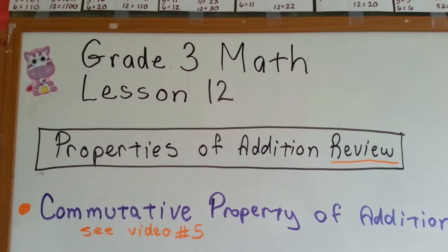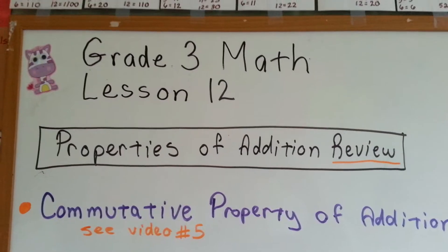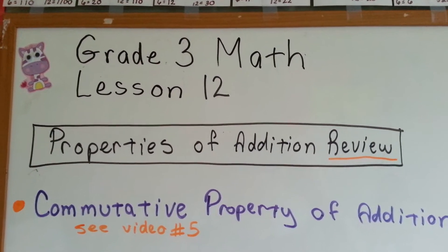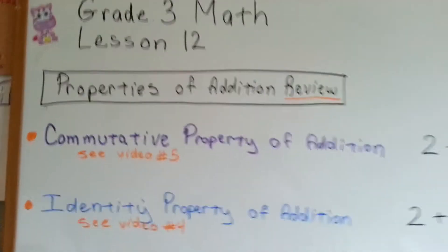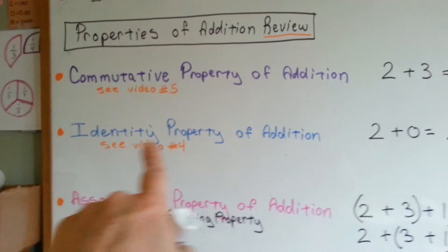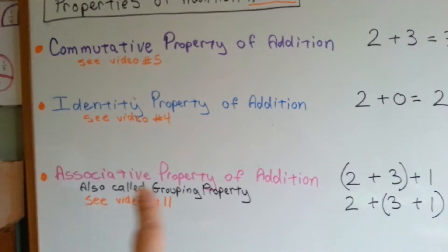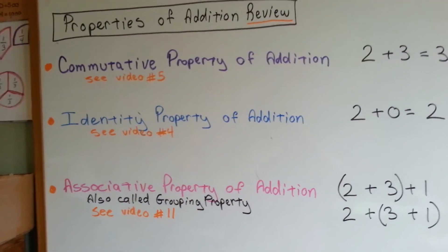Grade 3 Math, Lesson 12. This is a review of the properties we've covered, the properties of addition. We covered the commutative property, the identity property, and the associative property of addition so far.